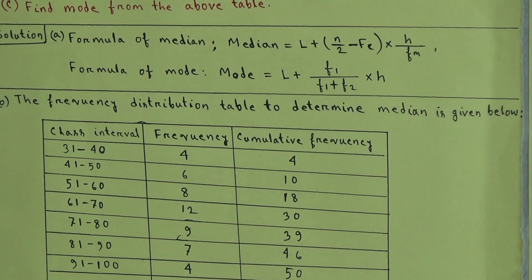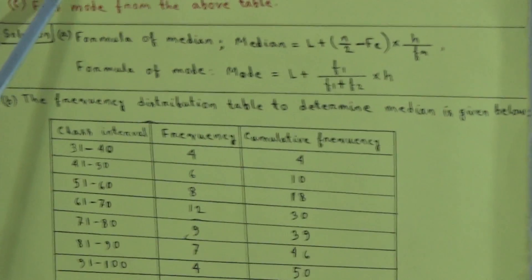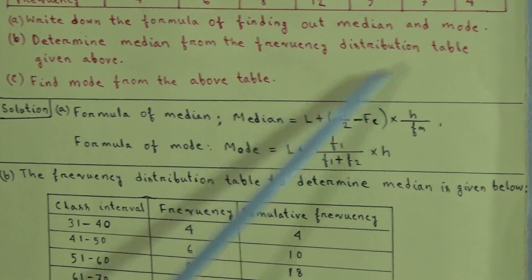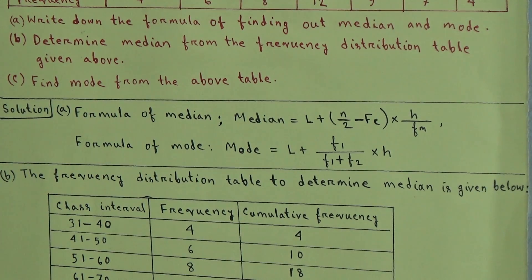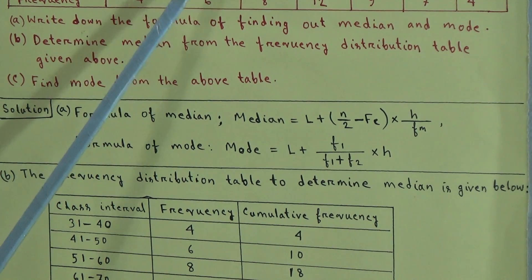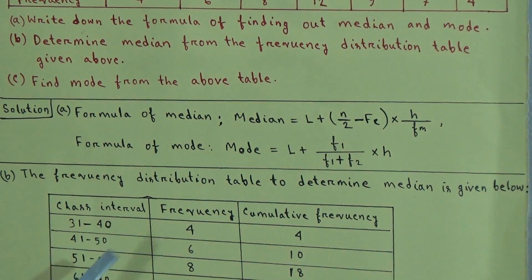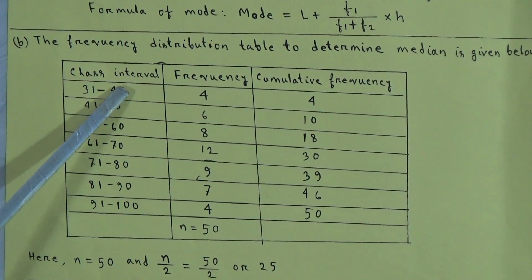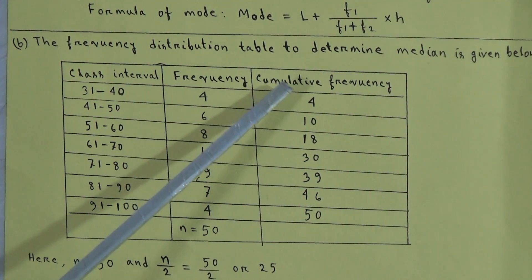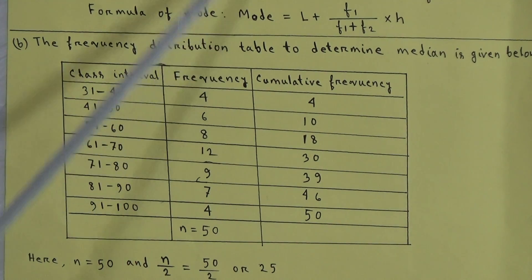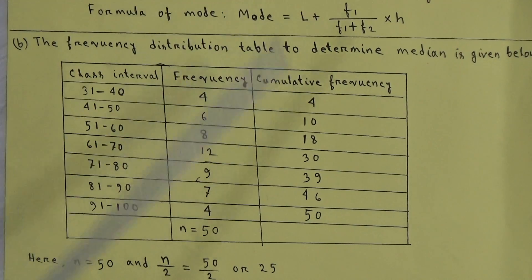Now we will solve B number question: determine median from the frequency distribution table given above. Here, a frequency distribution table is given with three columns — class interval, frequency, and cumulative frequency. The class interval and frequency columns are taken from the original table. The cumulative frequency is a new column we are adding.